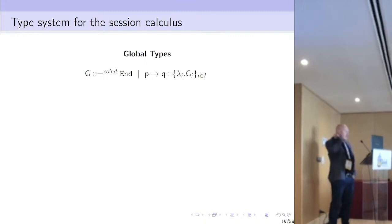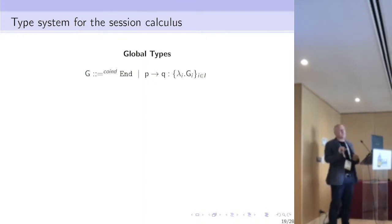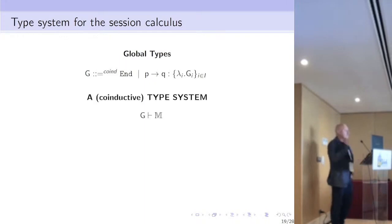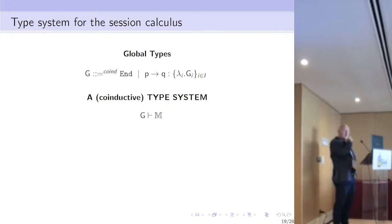The global type of the form P sends one of the messages lambda-i to Q and then proceeds as G-i. It looks sequential, but if in G-i there is another communication from R to S, the communications P-to-Q and R-to-S are considered independent and can work in parallel. There is a co-inductive type system which enables deriving judgments saying that the system M can be typed with global type G.